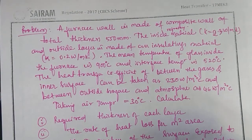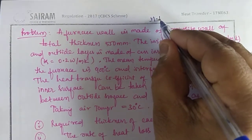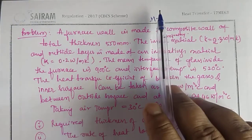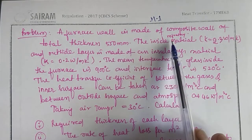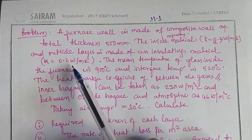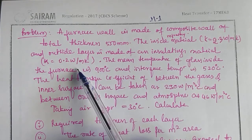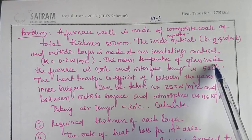Hello students, we are going to discuss a problem on Model 1 based on a wall. The problem is like this: a furnace wall is made of a composite wall of total thickness 450 mm. The inside refractory material has K equal to 2.3 watt per meter Kelvin, and the outside layer is made of an insulating material with K equal to 0.2 watt per meter Kelvin.